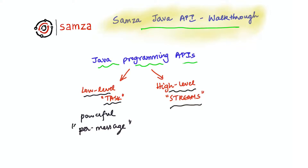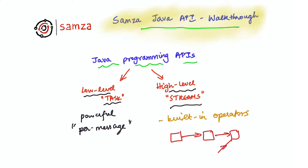The high-level Streams API provides you with a rich set of built-in operators like map, flat map, filter, windowing, joins, etc. This allows you to describe your processing pipeline as a directed acyclic graph of operations on individual message streams. Let's now look at how to build an actual application using each of these two APIs.